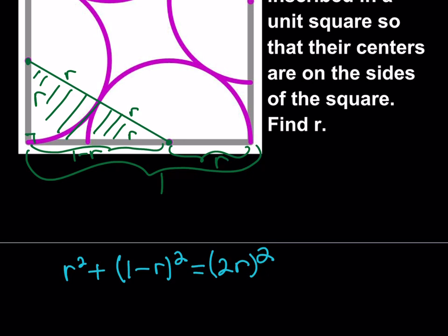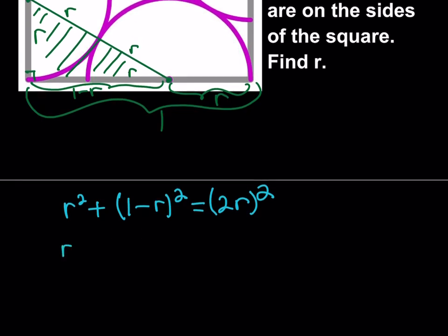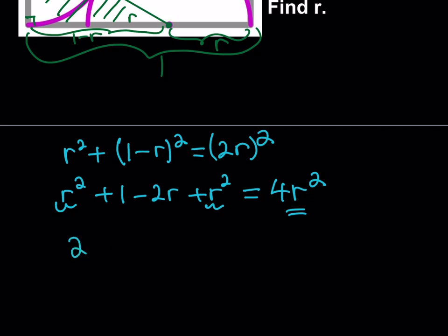Let's go ahead and expand this. This is going to give me 1 minus 2r plus r squared and on the right hand side we should be getting 4r squared. Notice that these two will make 2r squared. Subtract it from 4r squared. You should be getting 2r squared on the right hand side. Add 2r to both sides and then subtract 1 and you should be getting this quadratic equation.